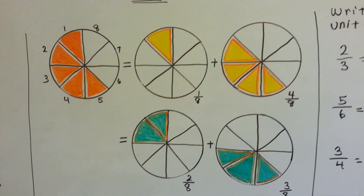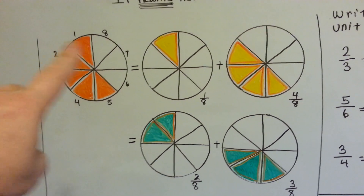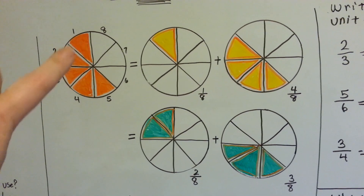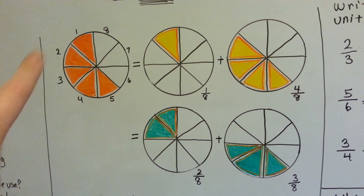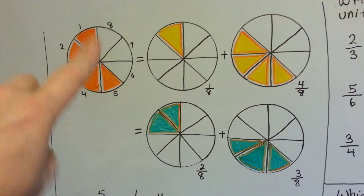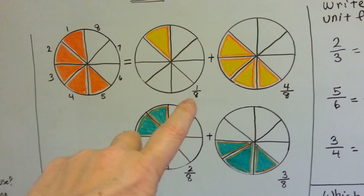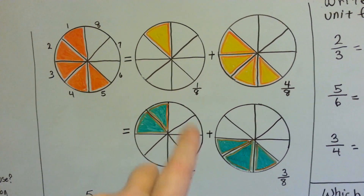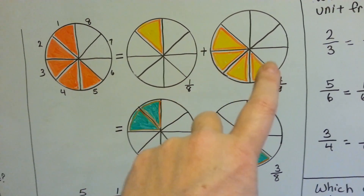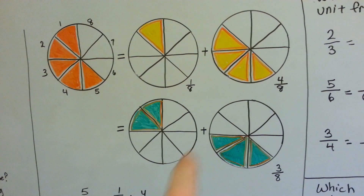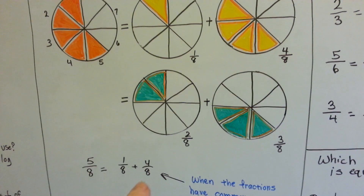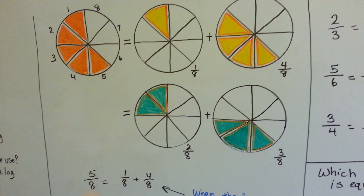Let's take a look at these circles. Here's the answer circle, and here's the addition circles. We've got the circle split into 8 parts: 1, 2, 3, 4, 5, 6, 7, 8. If we took 1 eighth — just 1 piece — and added it to 4 pieces, 4 eighths, we would have 5 eighths. 1 eighth plus 4 eighths equals 5 eighths.